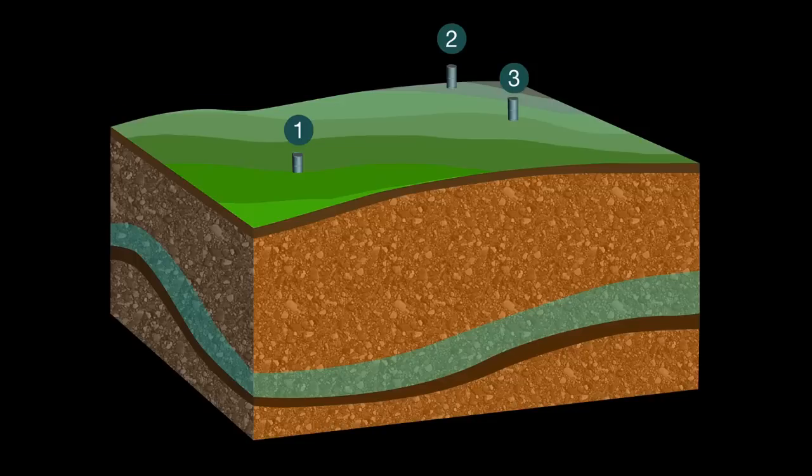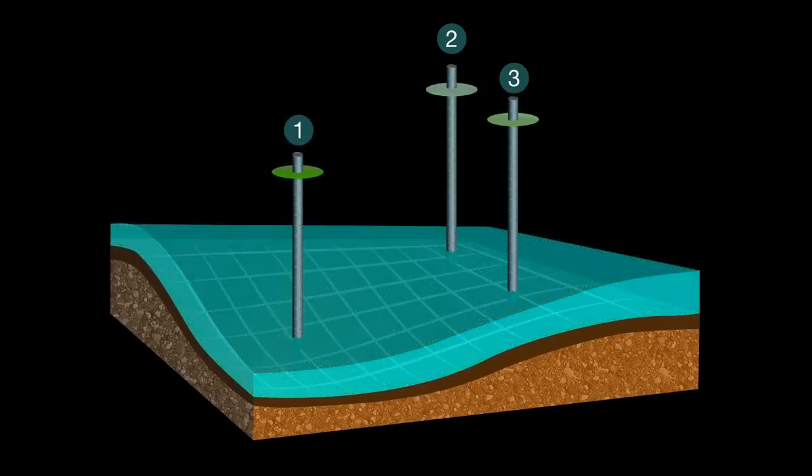Step three: determine flow direction by connecting the water table elevation points of the wells in a triangle. See the tilt of the water table? Now we have our answer and can see which way the groundwater is flowing.